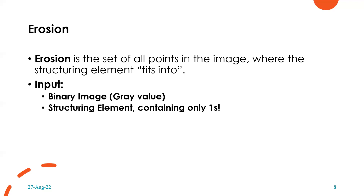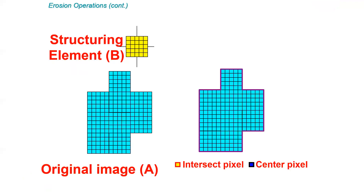The inputs for erosion are: one, a binary image which is actually a gray value image; and two, a structuring element which contains only ones. Structuring elements can contain zero, one, and none, but for erosion all the values are ones. The structuring element B acts onto the original image A — yellow represents the intersect pixel and blue represents the center pixel, showing how erosion operations happen one by one as the structuring elements work with respect to the center pixels.